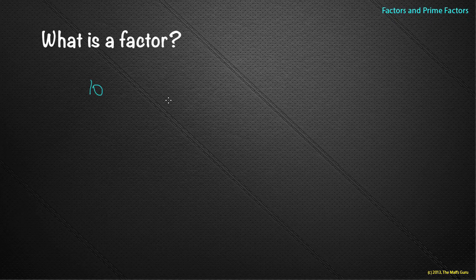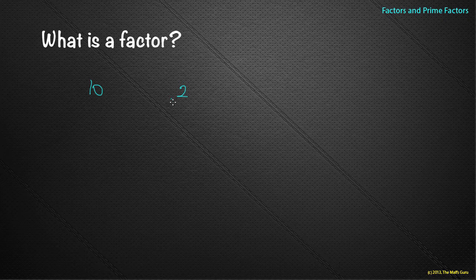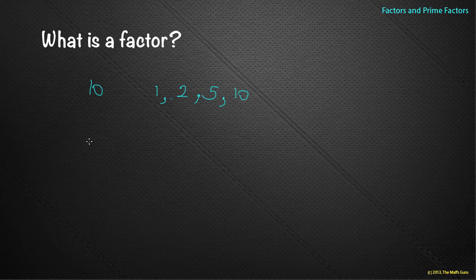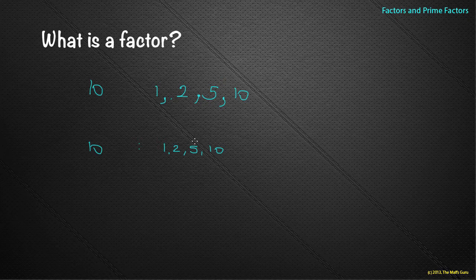Let's look at the number 10. Most people tend to say two — yes, two is certainly a factor — but it's important to work in order. The most obvious factor that goes into every single number is one. Working up: three doesn't go in, four doesn't, but five does. Six through nine don't. Ten does. So the factors of ten are one, two, five and ten.